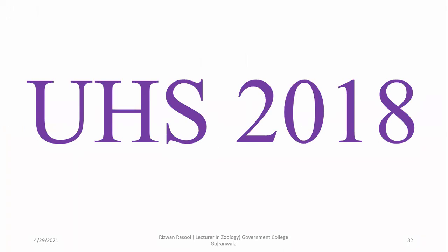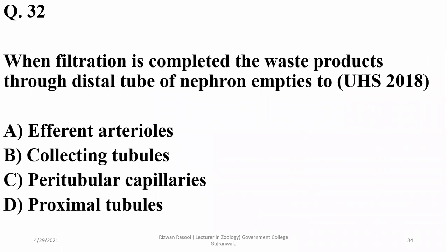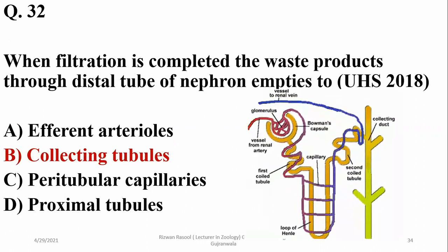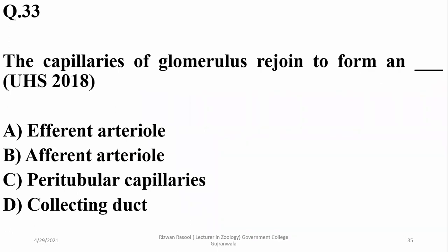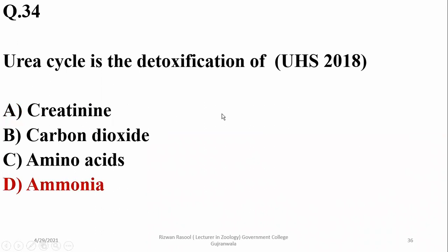From the 2018 past papers: keeping a correct balance of ions and water in the body is called osmoregulation. When filtration is completed, the waste products through the distal tubule of the nephron empty into the collecting duct, so beta is the right option. Also from 2018: the capillaries of the glomerulus rejoin to form the efferent arteriole, which exits the glomerulus — afferent is the arrival point and efferent is the exiting point.